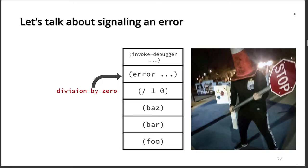This is a similar scenario to exceptions — in both cases program execution is halted. But here the stack is completely preserved. The stack information is fully available, so we don't need to construct stack traces and stuff them into exceptions. The program is still running, and it is still possible to recover from this situation and have it continue executing without crashing it and starting from scratch again.